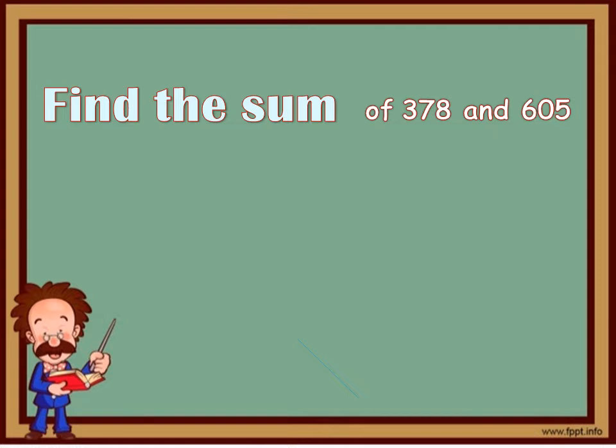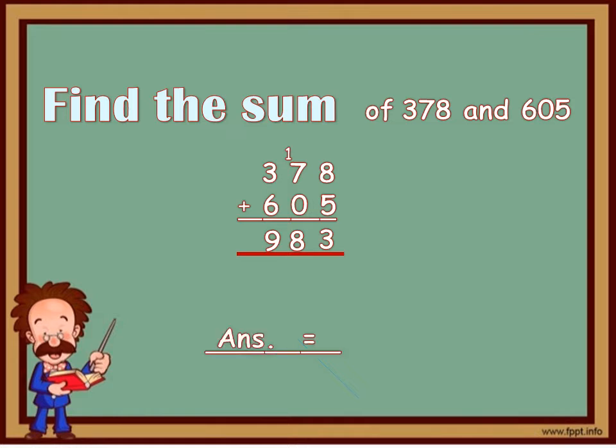So, you write the addends. 378 plus 605 and start adding. You get 3, carry over 1. 1 plus 7 is 8 and 3 plus 6 is 9. So, the sum is equal to 983.